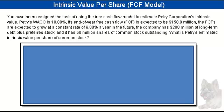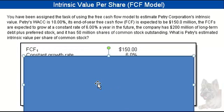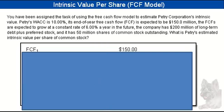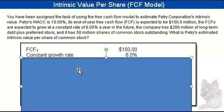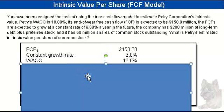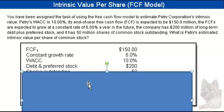Let me walk through the solution here. The first thing to recognize is that the free cash flow at the end of the year is given — it's $150 million. They tell us it's expected, so we know that's the end of the year, not the current dividend. So free cash flow sub 1 is $150. The constant growth rate is given at 6%, and the weighted average cost of capital is also given at 10%.